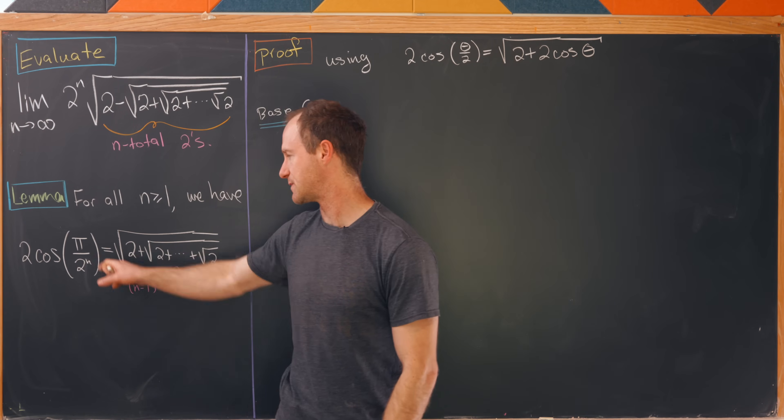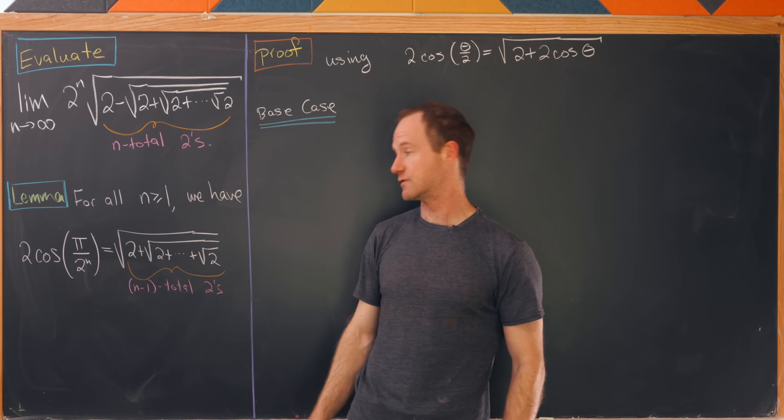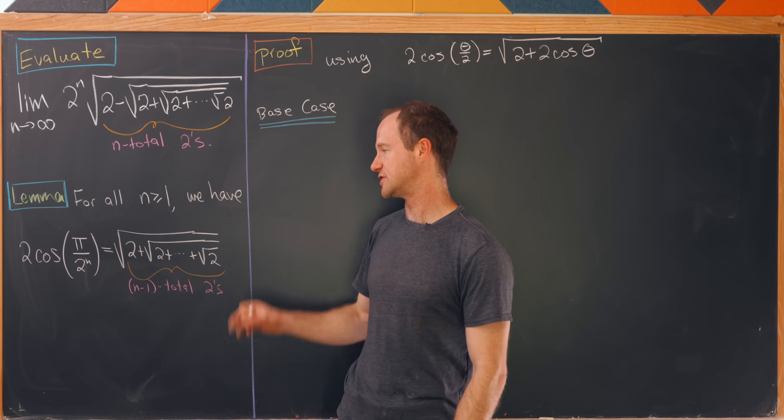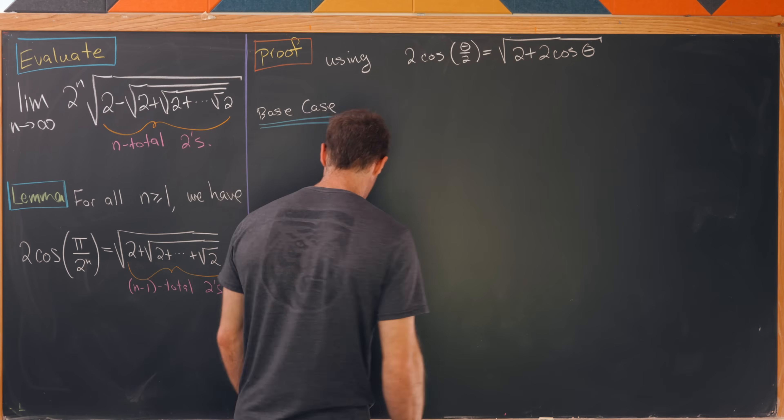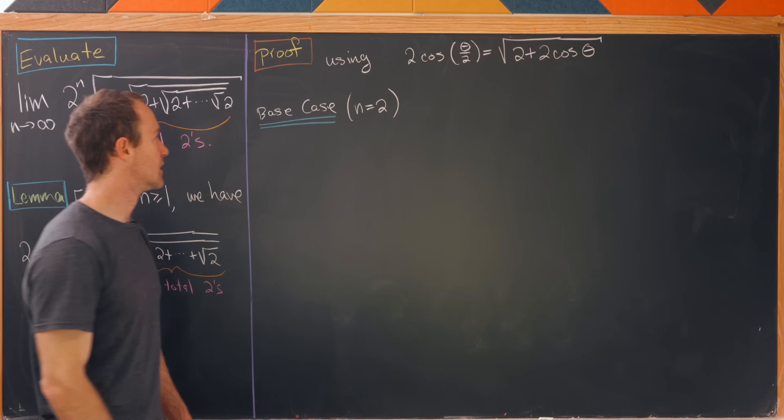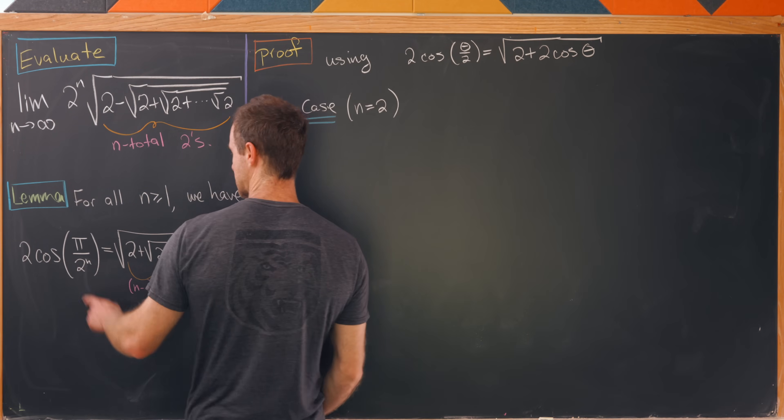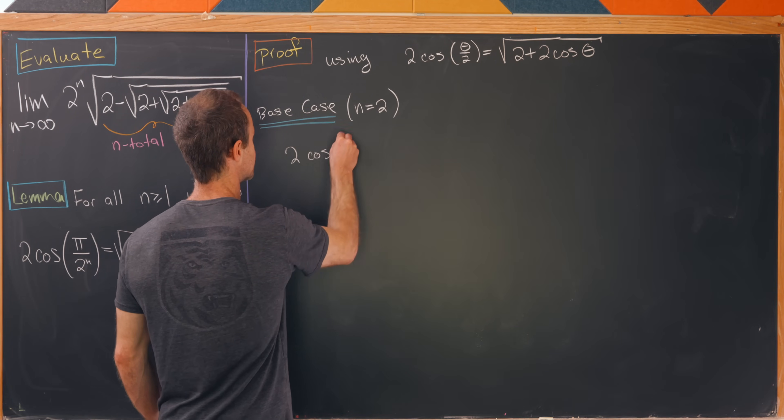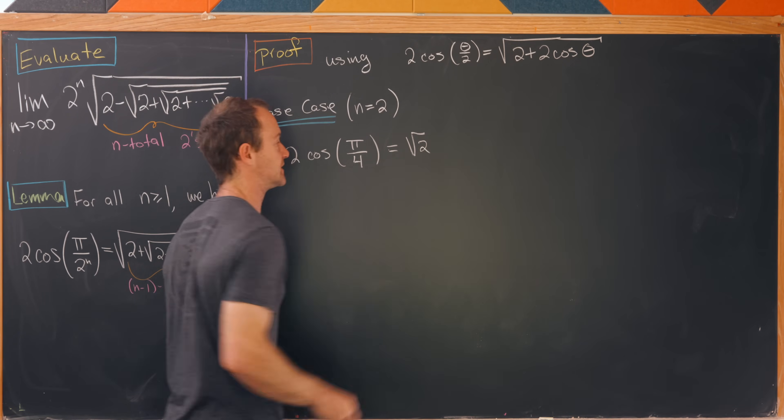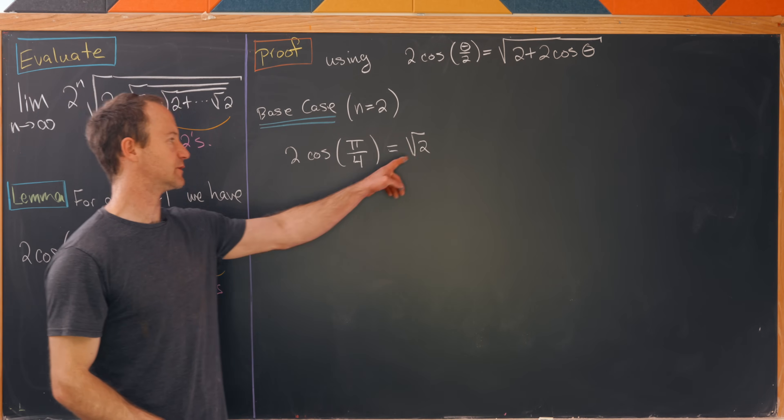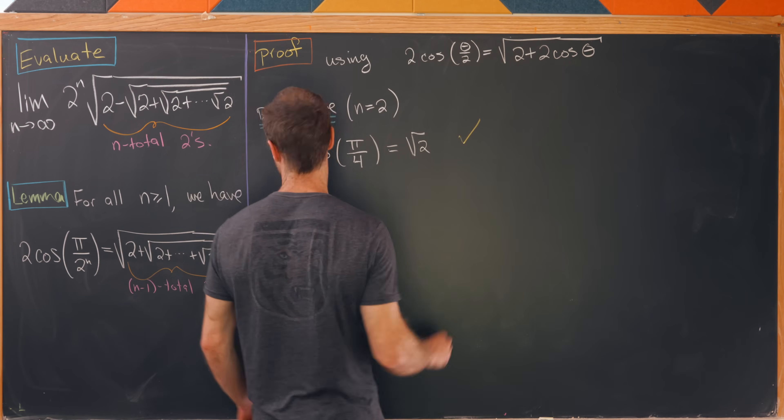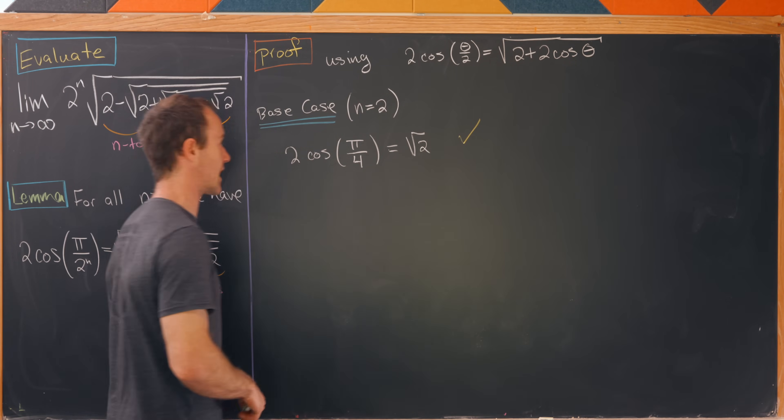n equals 1 would be the smallest possible value of n, but that's not super interesting. That gives us pi over 2, cosine of pi over 2 is 0, which gives us 0 total twos here, meaning that's just the sum of 0 objects or 0. So that works out. But let's do a more interesting base case, n equals 2. Now 2 times the cosine of pi over 4 equals the square root of 2. That totally works because we've got a single square root of 2 there. So here we're all set. This rule is satisfied for our base case.